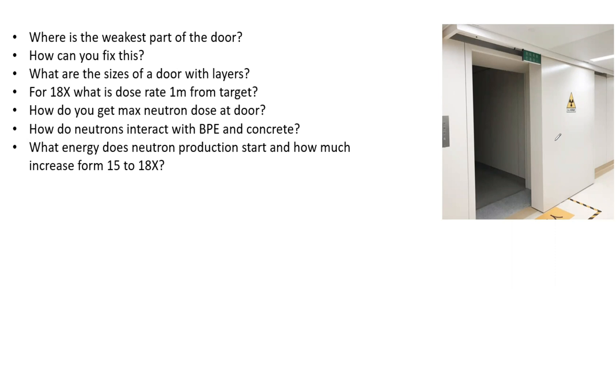Today we're going to talk about the doors to your radiation vault. What are the weakest parts of the door? How can you fix it? What are the sizes of the door with the layers? For 18X, what is the dose rate one meter from the target? How do you get max neutron dose at the door? How do neutrons interact with BPE and concrete? And what energy does neutron production start and how much does it increase from 15 to 18X?